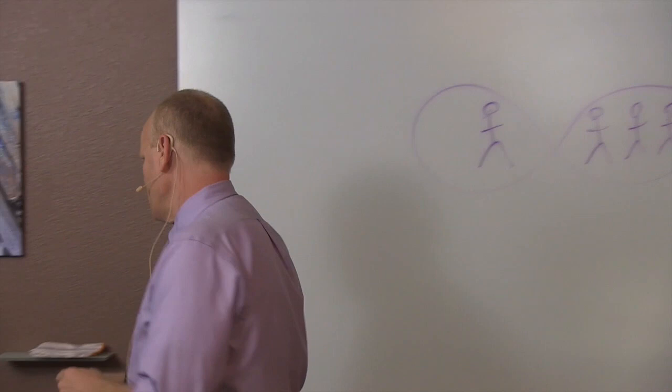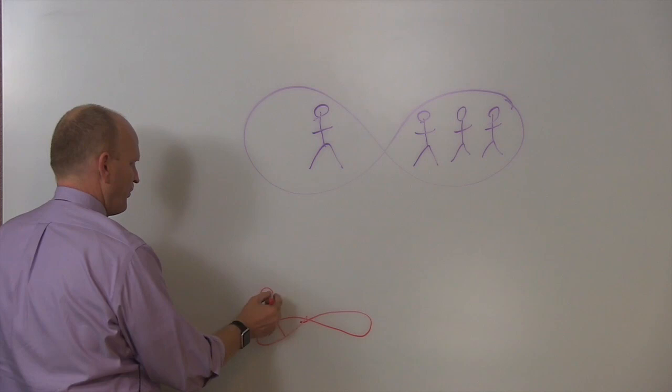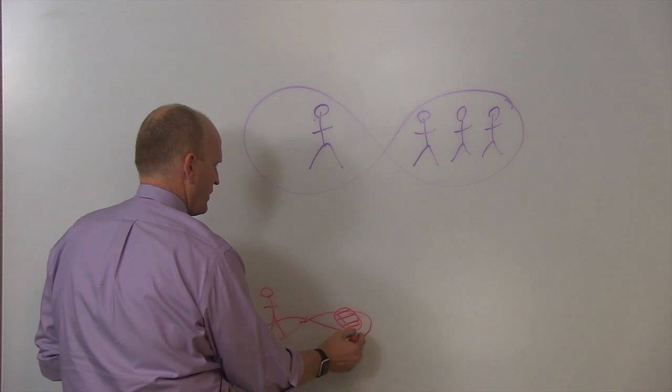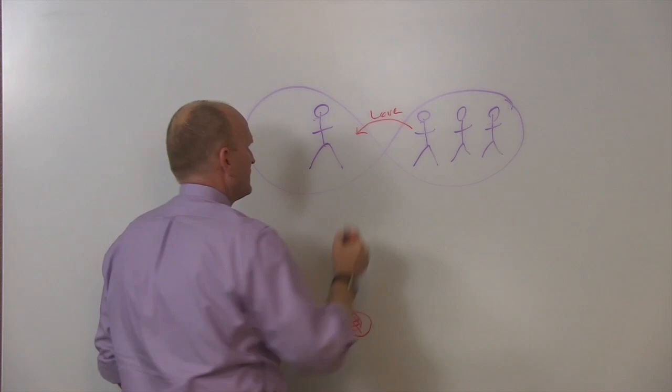This is the part that many get confused about, because the figure eight actually looks like this. You're standing here, the whole world is here. Through this, the only thing that's able to even permeate this part is love.